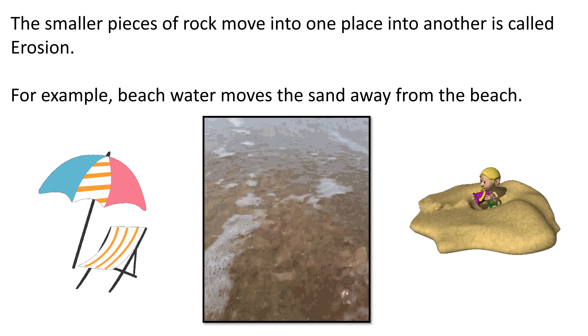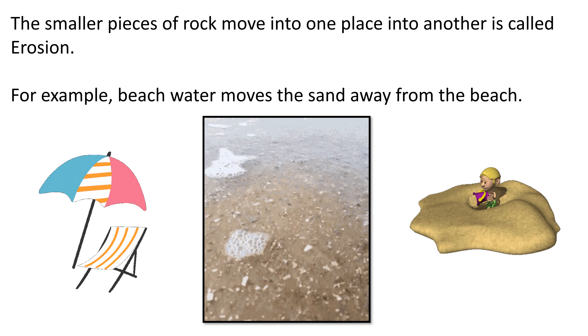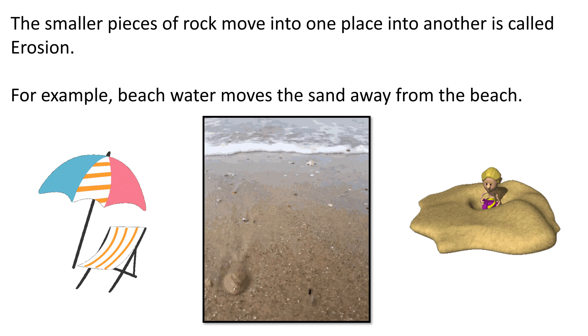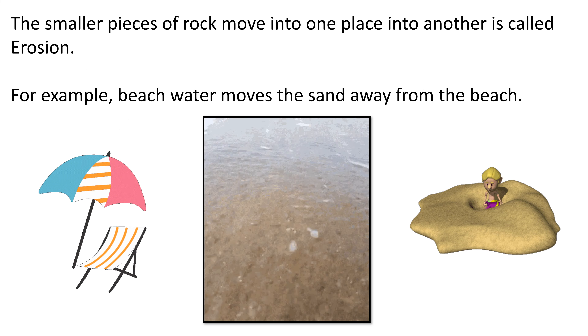The smaller pieces of rock moving from one place to another is called erosion. For example, beach water moves the sand away from the beach.